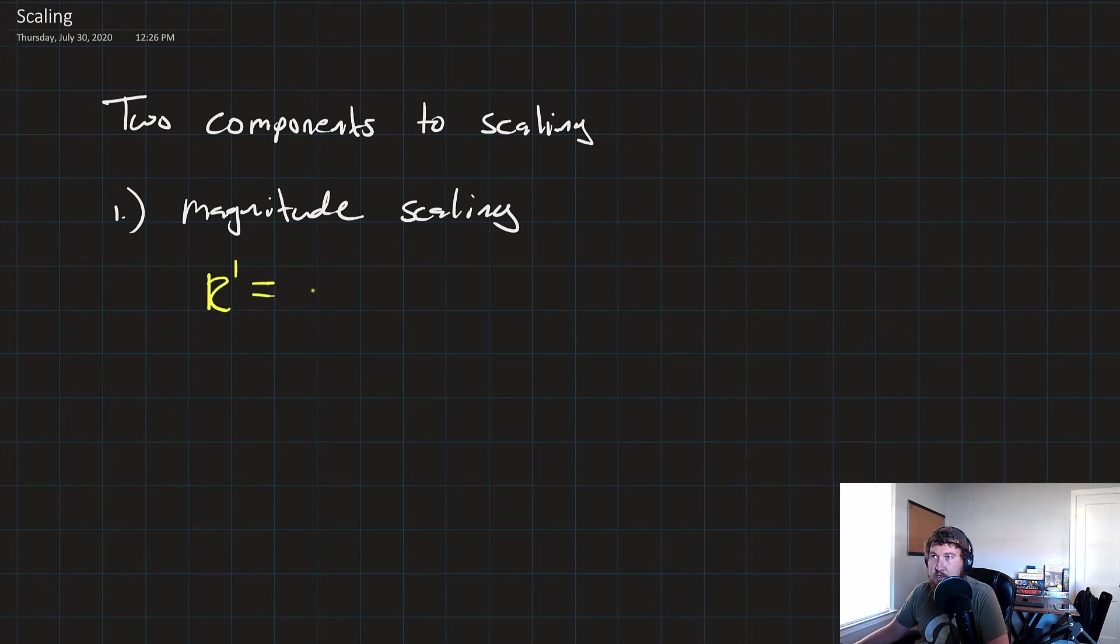For inductors, the scaled inductor is also just Km times L. For capacitors, it's a little bit different. It's equal to the original capacitance, but this time it's divided by Km.